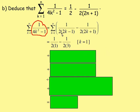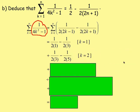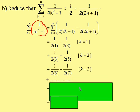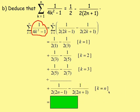Substituting k = 2 gives 1 over 2(3) minus 1 over 2(5). Substituting k = 3 gives 1 over 2(5) minus 1 over 2(7). We keep going like this down to k = n, which gives 1 over 2(2n − 1) minus 1 over 2(2n + 1).